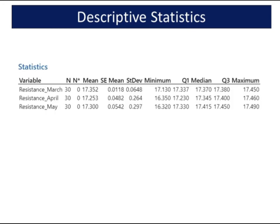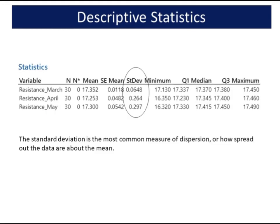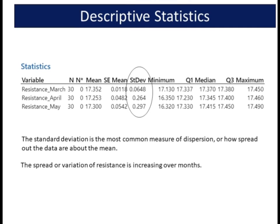The standard deviation is the most common measure of dispersion, or how spread out the data are about the mean. From the analysis, the spread or variation of resistance is increasing over months.